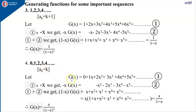Now let g(x) = 0 + 1x + 2x² + ... — call this equation 1. Multiply equation 1 by minus x: we get minus x·g(x) = −x² − 2x³ − ... — call this equation 2.